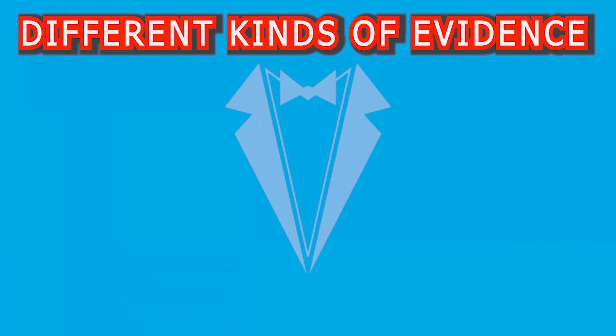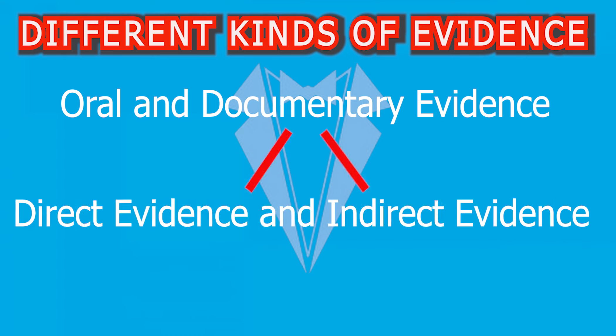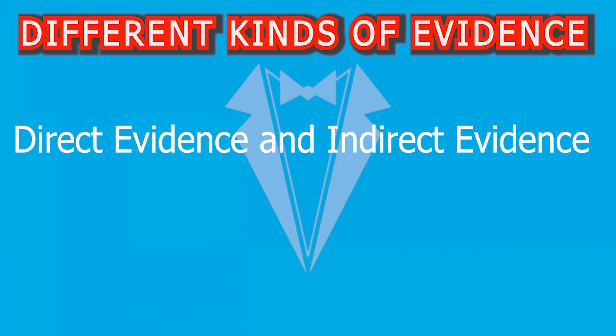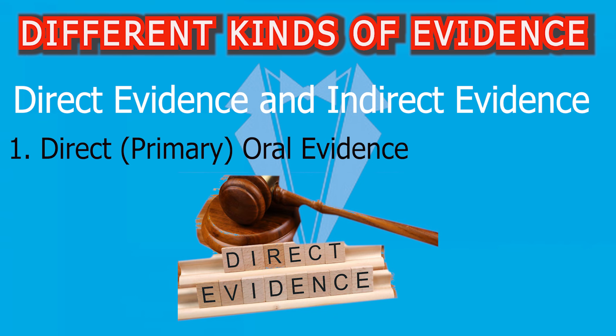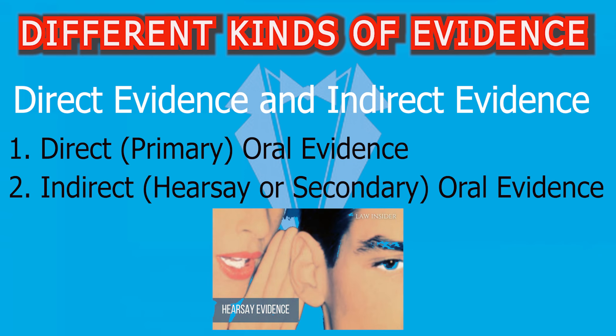Under the Indian Evidence Act 1872, both oral and documentary evidence can be further categorized into direct and indirect evidence. Direct or primary oral evidence consists of statements made by a witness based on personal knowledge of the facts in question, where the witness directly perceives or experiences the events. For example, a person who witnessed a car accident and testifies about what they saw. Indirect, hearsay, or secondary oral evidence consists of statements made by a person who did not directly witness the events but heard about them from someone else — generally considered less reliable due to the potential for inaccuracies. For example, a person testifying about a conversation heard from a third party regarding the car accident.